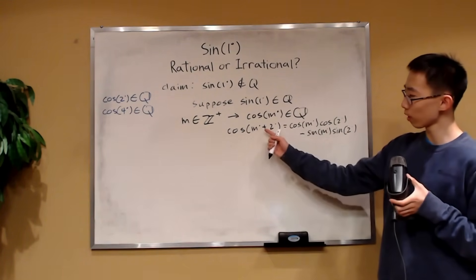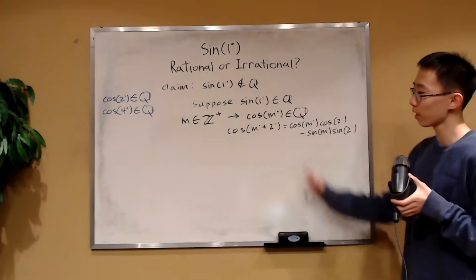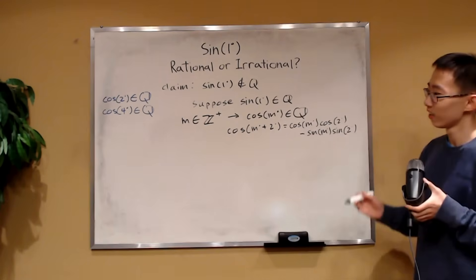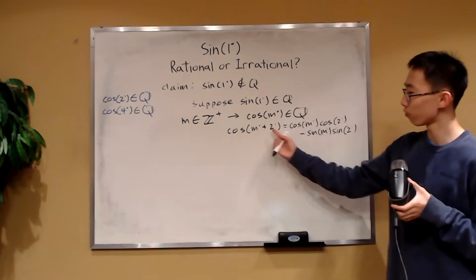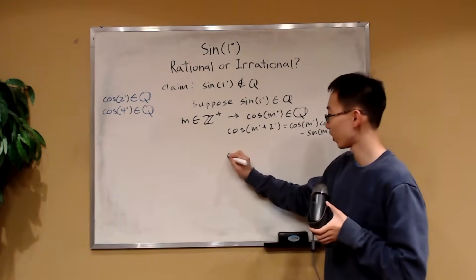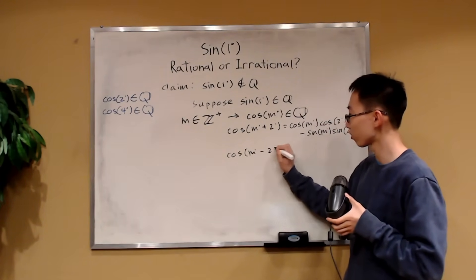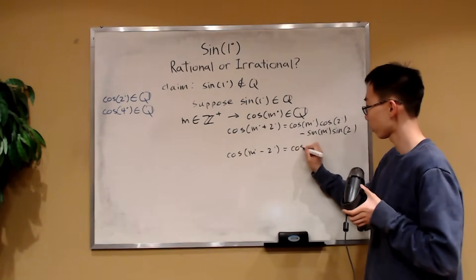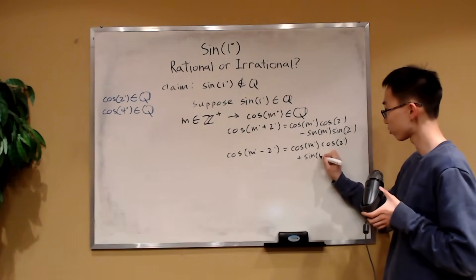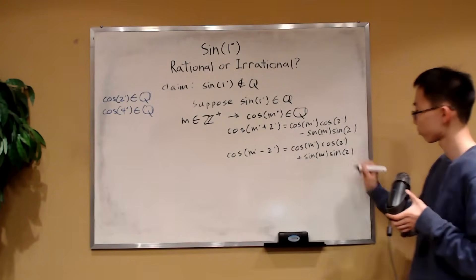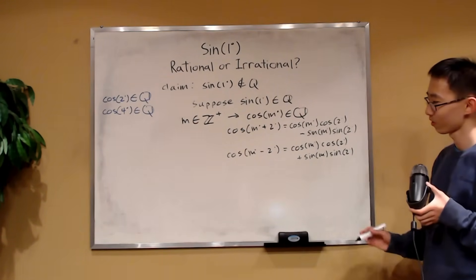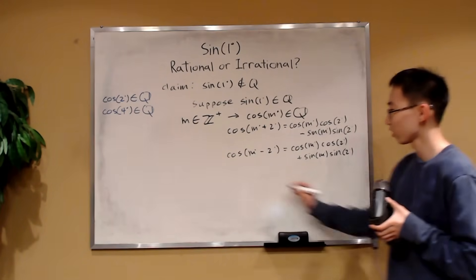We have cosine of m plus 2 degrees. Why not also consider cosine of m minus 2 degrees? That's helpful because when you have minus 2 degrees, the sine term becomes plus. So cosine of m minus 2 degrees expands to cosine of m degrees times cosine of 2 degrees plus sine of m degrees times sine of 2 degrees. Notice one equation has a minus sign and the other has a plus sign — why don't we add them so the sine parts cancel out?